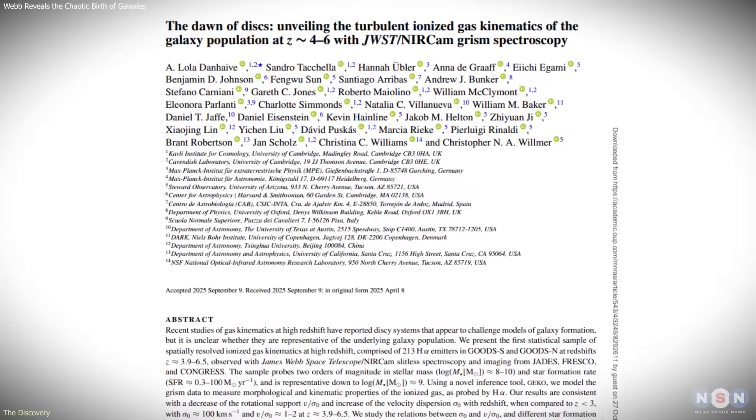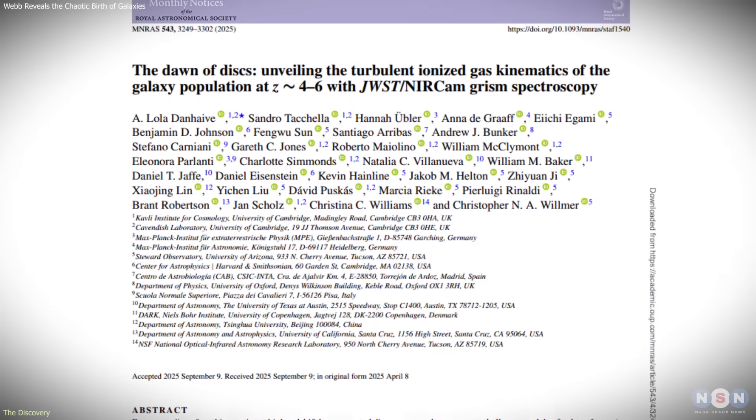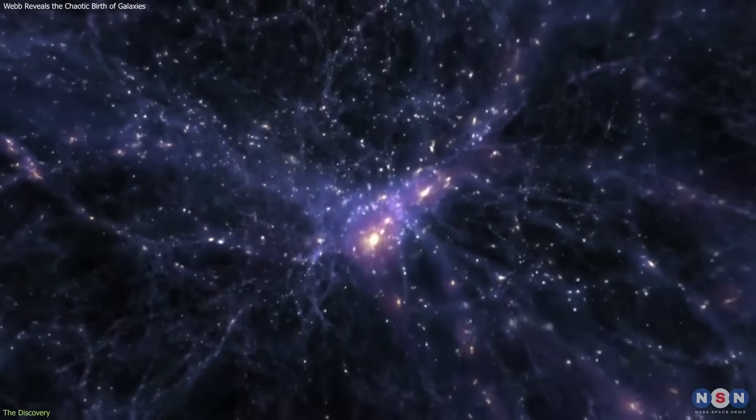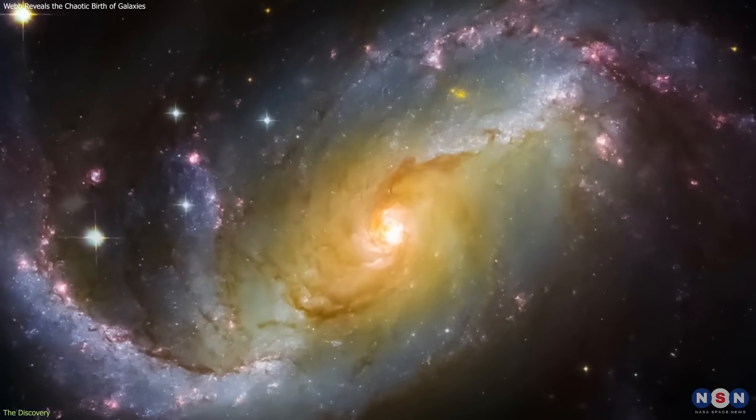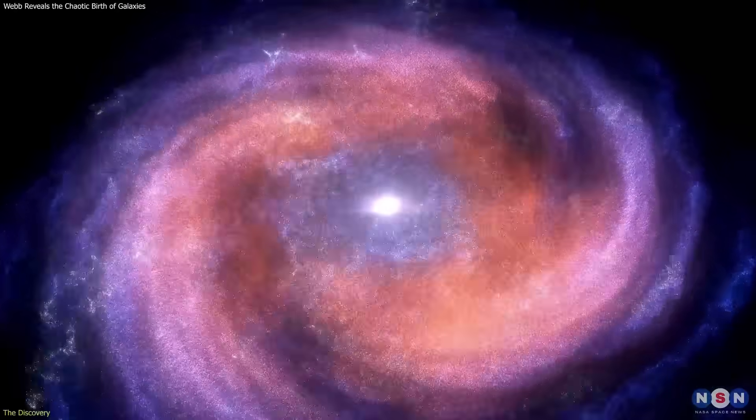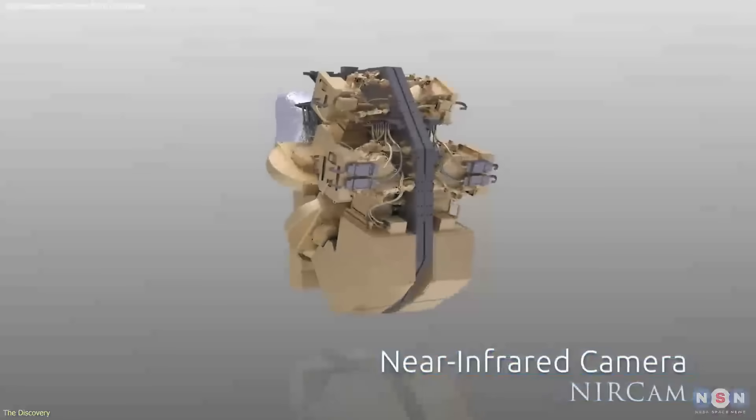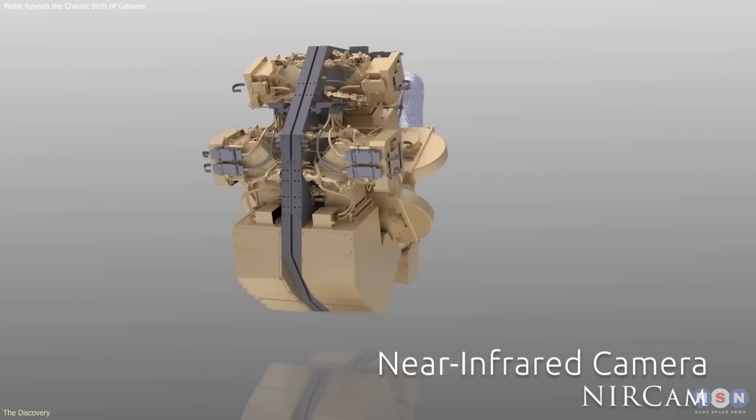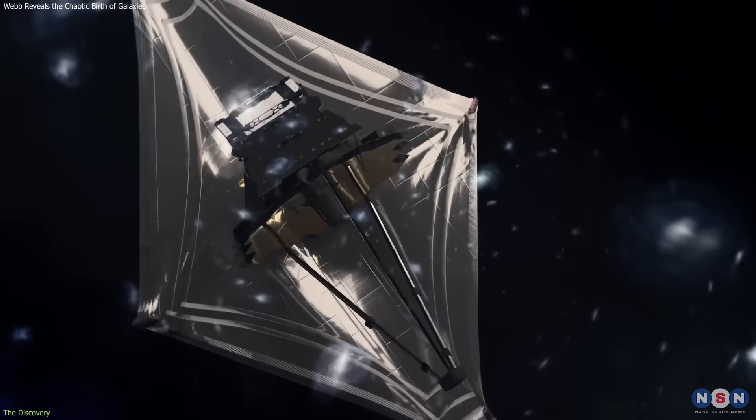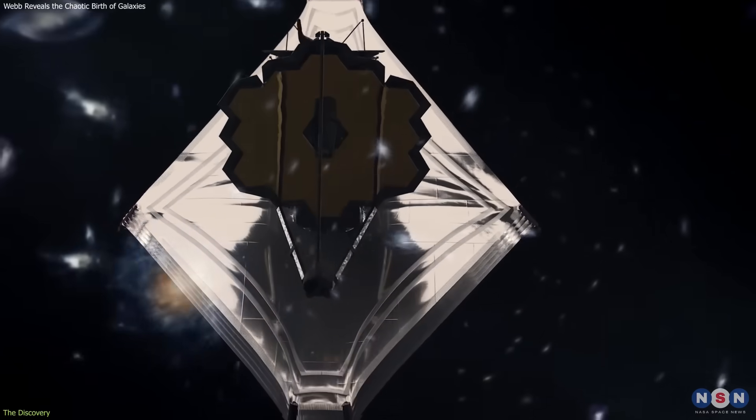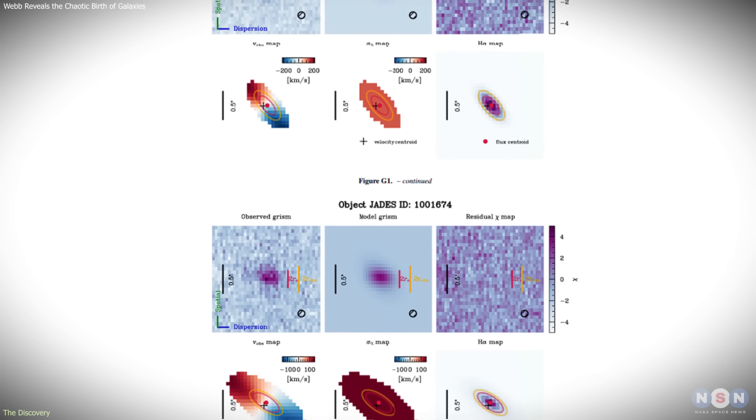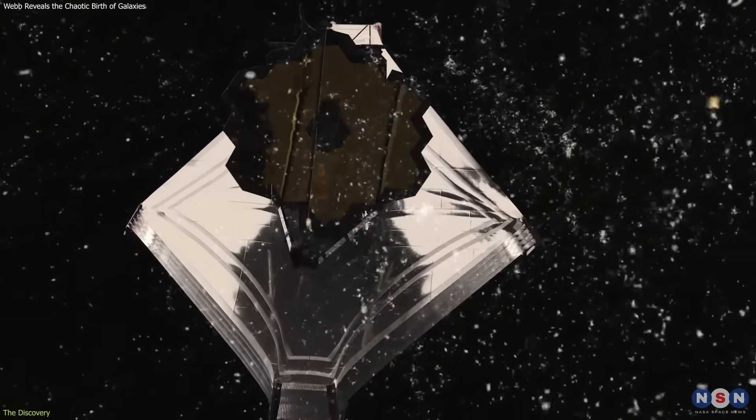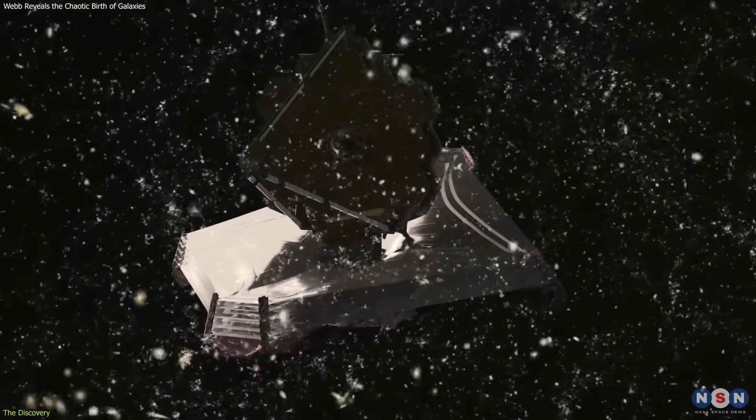To grasp the impact of this discovery, we need to look at what was observed. Roughly 800 million to 1.5 billion years after the Big Bang, galaxies were still in their formative stages. For years, scientists debated whether they settled into rotating disks quickly or developed through a longer, more chaotic process. The Cambridge team used JWST's NairCam instrument in GRISM mode to analyze more than 250 galaxies from this early period. This mode allowed them to capture faint light from ionized hydrogen and track how gas moves inside each galaxy. It was a large-scale look at galactic dynamics that previous telescopes couldn't deliver.